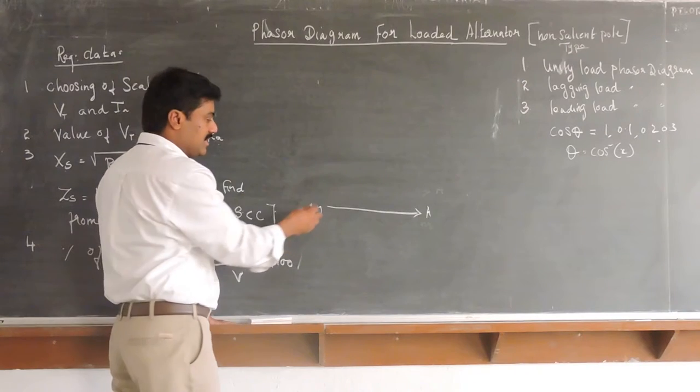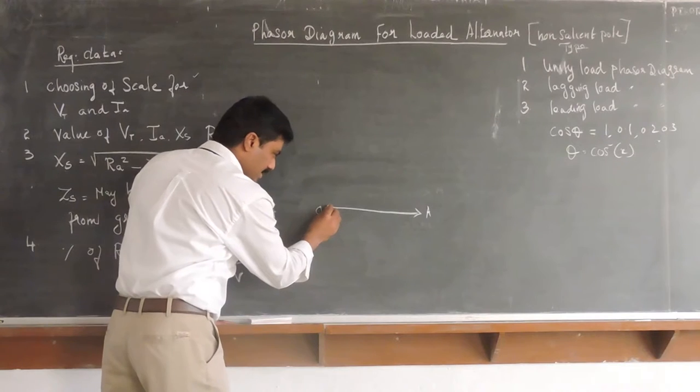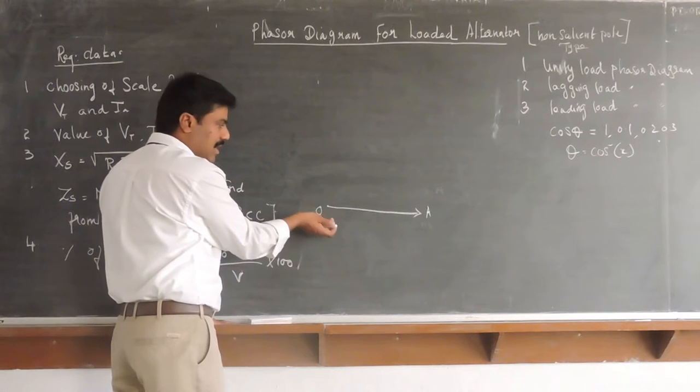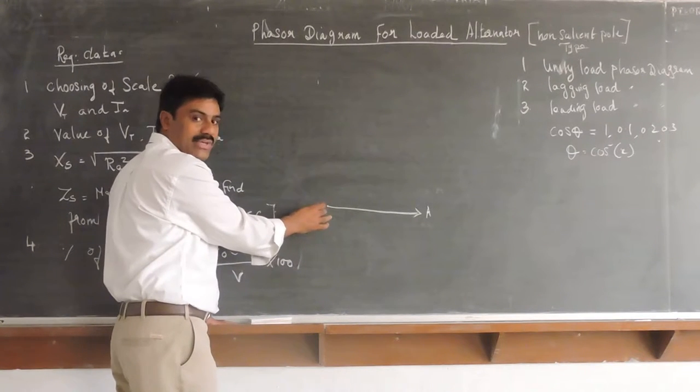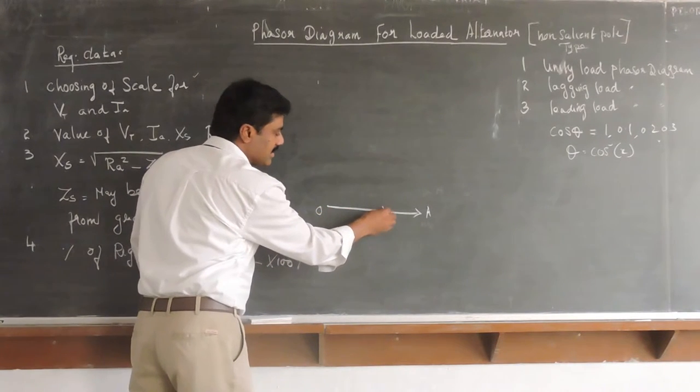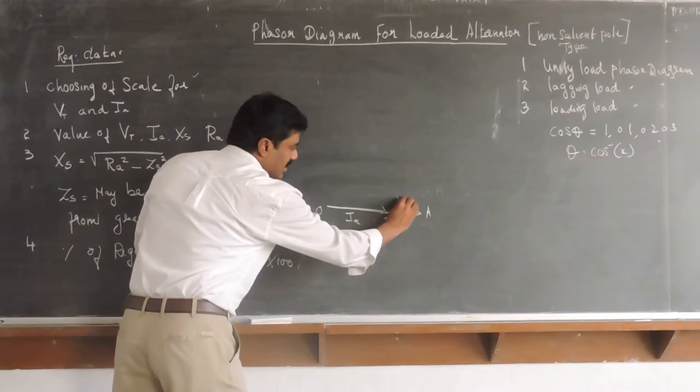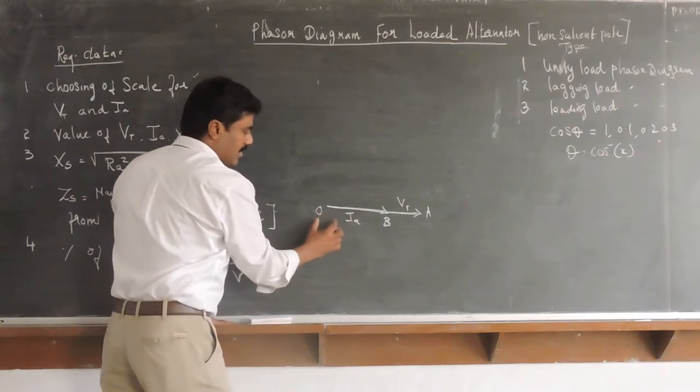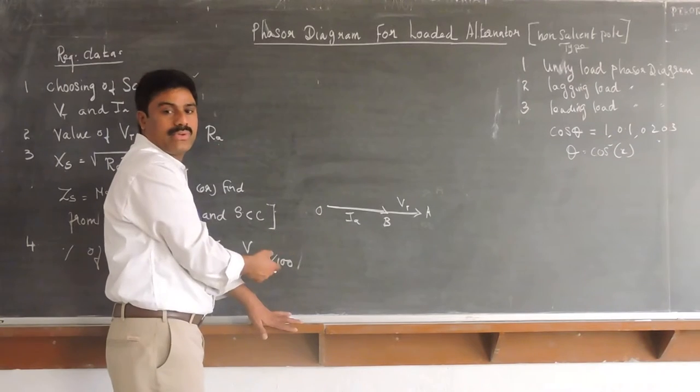After that, just draw a vector called OB vector which is the current vector. In this case, it is not going to lag or lead because it is unity. Since phi equals zero, the current lies on the same axis. This is going to be OB, this is Ia, and OA vector is equal to V. Now, OA vector is the voltage vector, OB vector is the current vector. Both are on the same axis because phi is equal to zero.